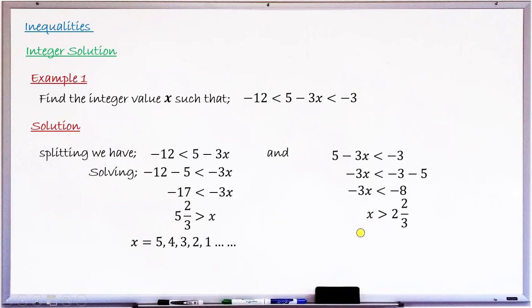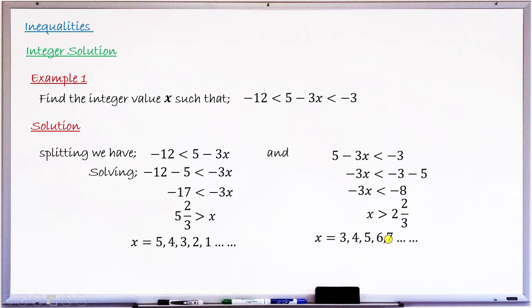Writing the integer solutions for this second inequality, since x must be greater than 2 and 2 over 3, the very first integer satisfying this is 3. So x takes values 3, 4, 5, 6, 7, and so on — all integers greater than 2 and 2 over 3.